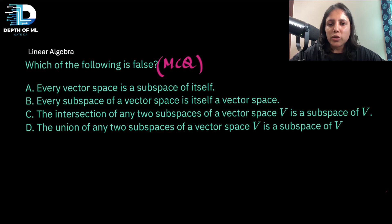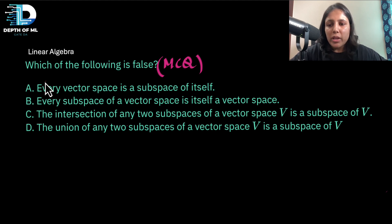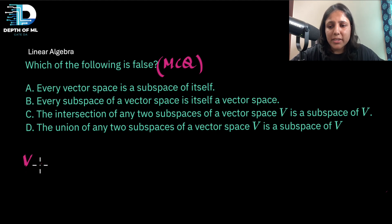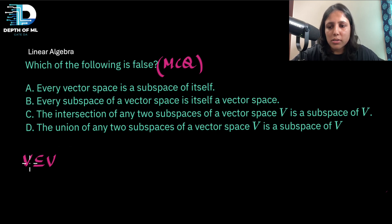The question says 'which of the following is false' — it's an MCQ where one of the given statements is false. The first statement asks whether every vector space is a subspace of itself. Say V is a vector space — is it a subspace of itself? I'll use the subset-or-equal symbol to denote 'subspace of'.